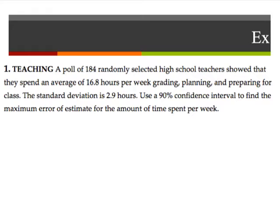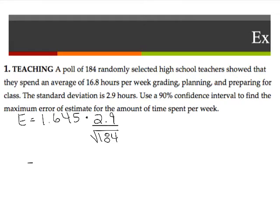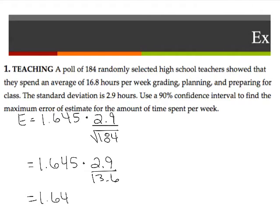Let's find the maximum error. We take our error E, find our Z-score based on a 90% confidence level, which is 1.645, times that by the standard deviation of 2.9 divided by the square root of 184. Following the order of operations, the square root of 184 is 13.6. Dividing 2.9 by 13.6, I get 0.214. Multiplying by 1.645, the maximum error ends up being 0.35.